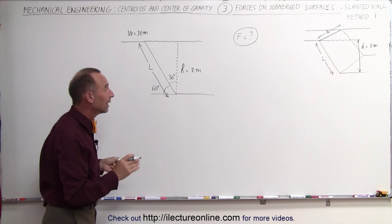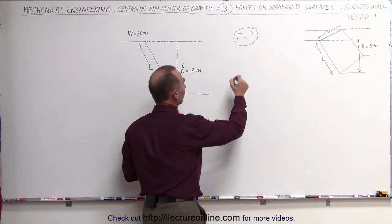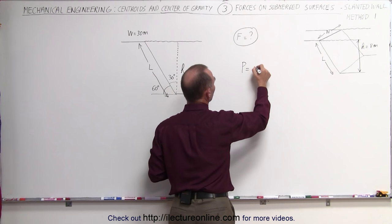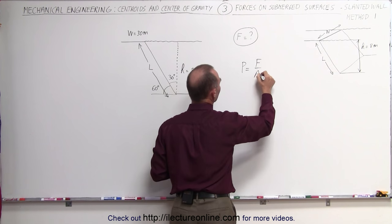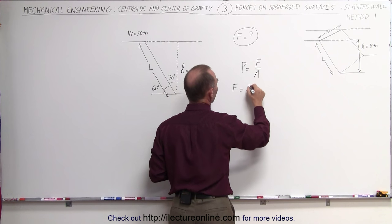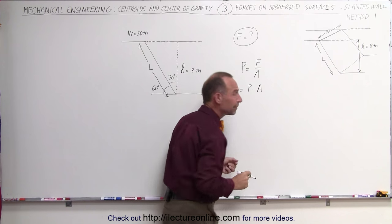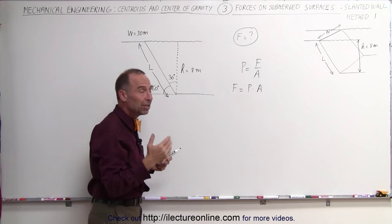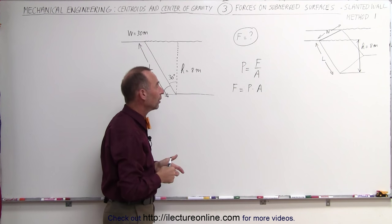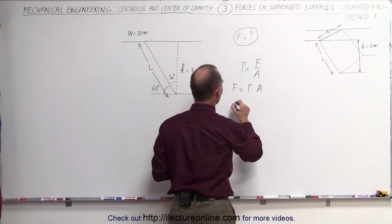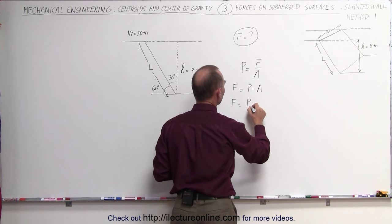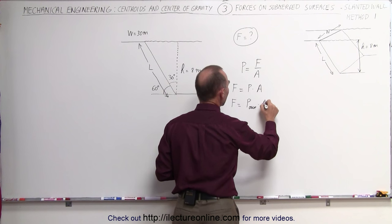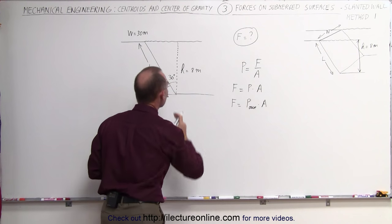Well the method we're going to do here is simply realize that the definition of the pressure is equal to the force divided by the area and therefore the force is equal to the pressure times the area. Again we realize that the pressure changes with depth. It's linearly proportional to the depth of the water and so what we can say here is that the total force is equal to the average pressure times the area of the slanted dam here.